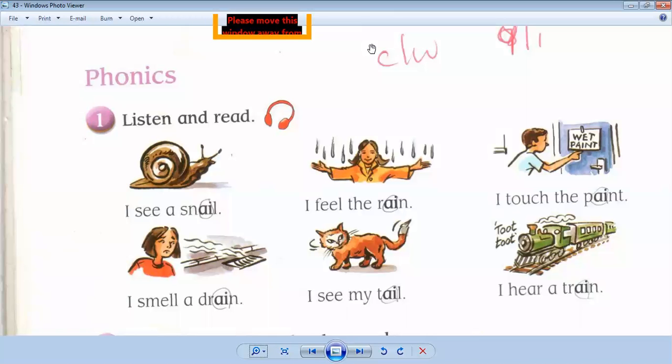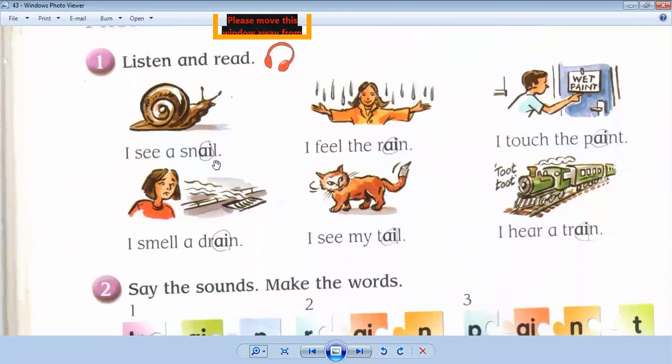After we finish the WH questions, let's go to phonics. Here we have the sound 'ai'. For example: I see a snail, I feel the rain, I touch the paint, I smell a drain, I see my tail.